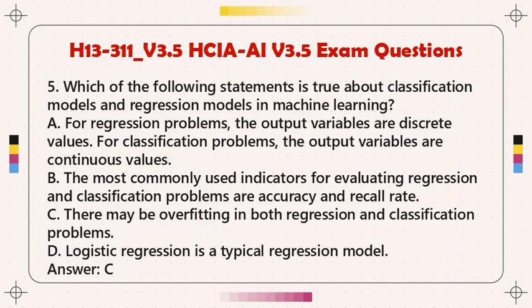Question 5: Which of the following statements is true about classification models and regression models in machine learning? A. For regression problems, the output variables are discrete values; for classification problems, the output variables are continuous values. B. The most commonly used indicators for evaluating regression and classification problems are accuracy and recall rate. C. There may be overfitting in both regression and classification problems. D. Logistic regression is a typical regression model. Answer: C.